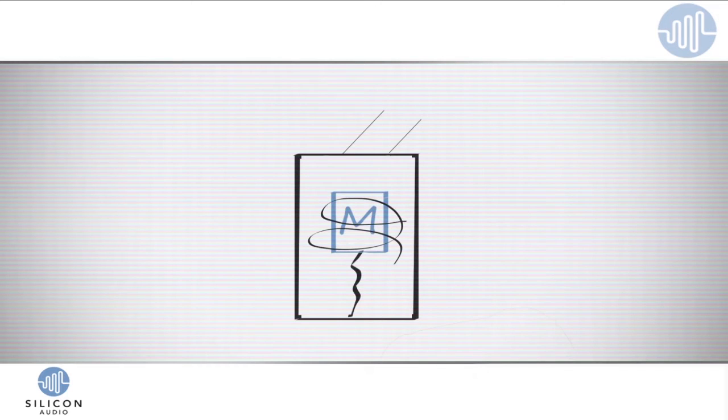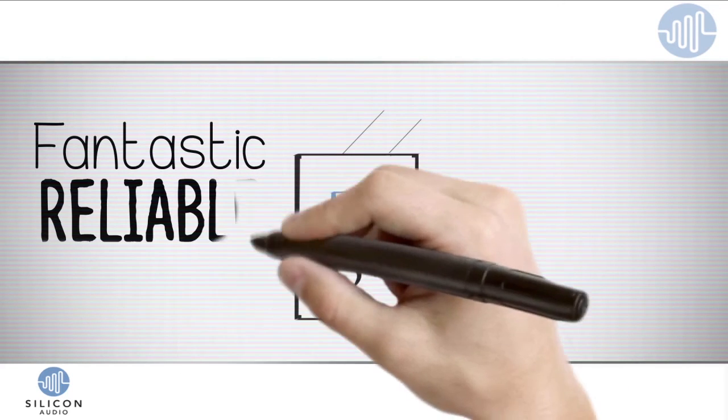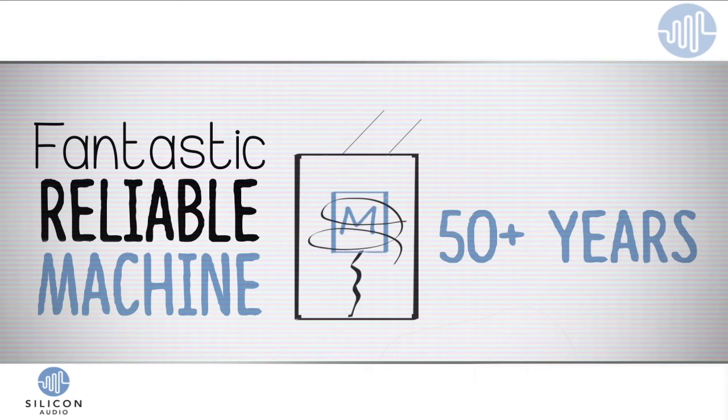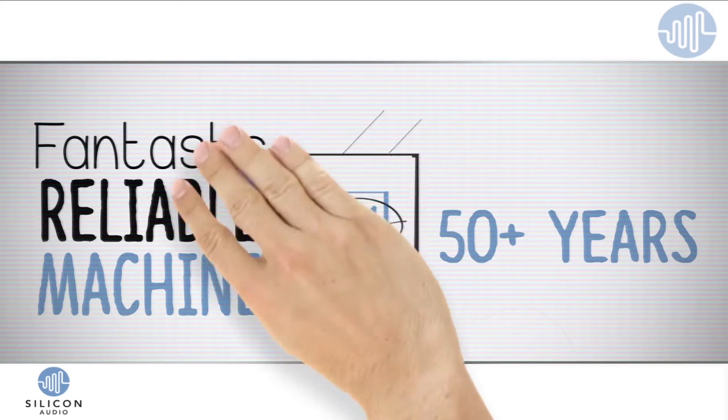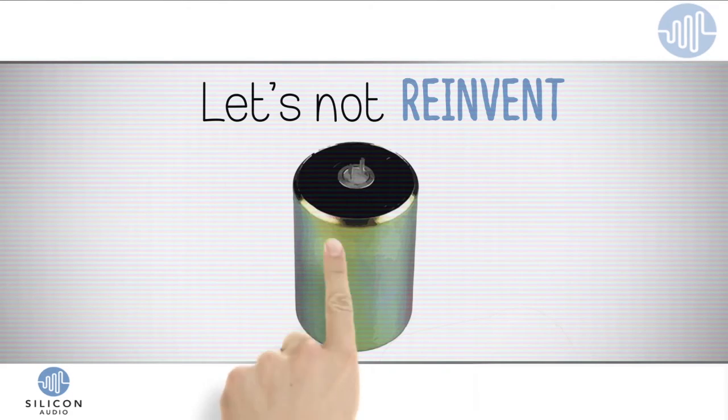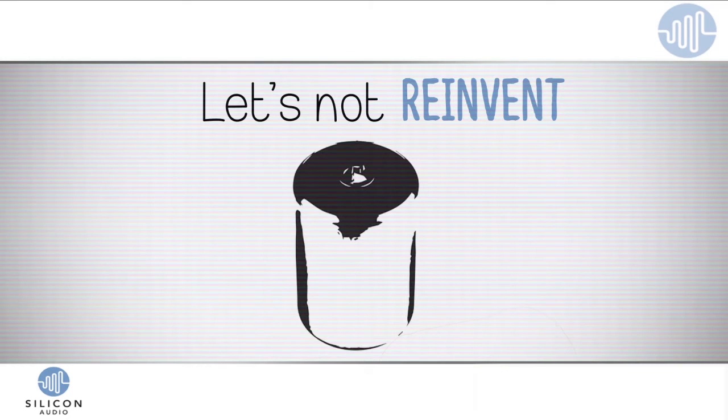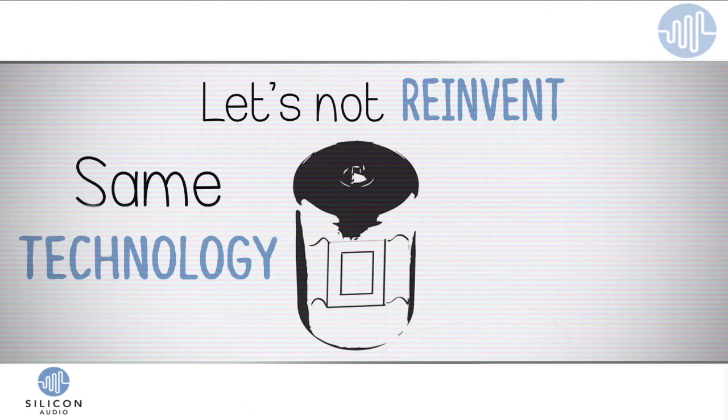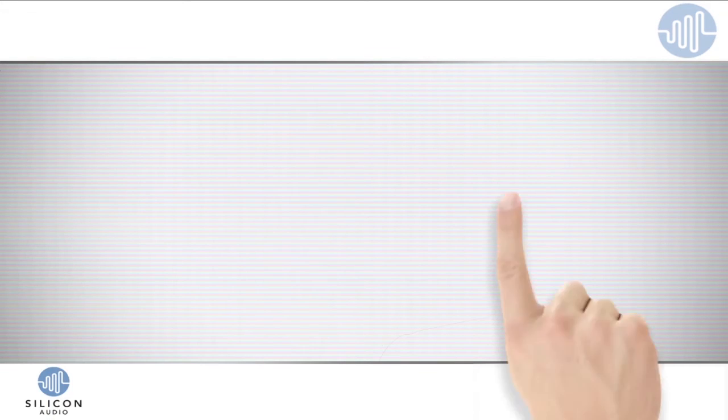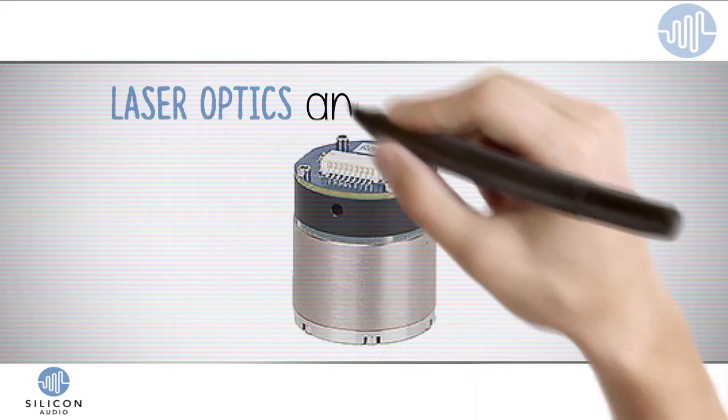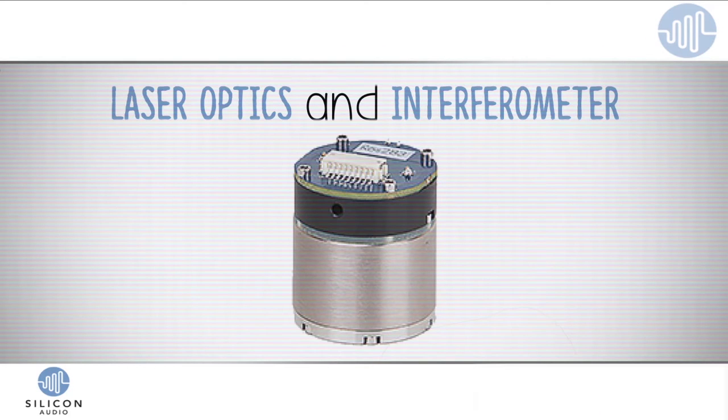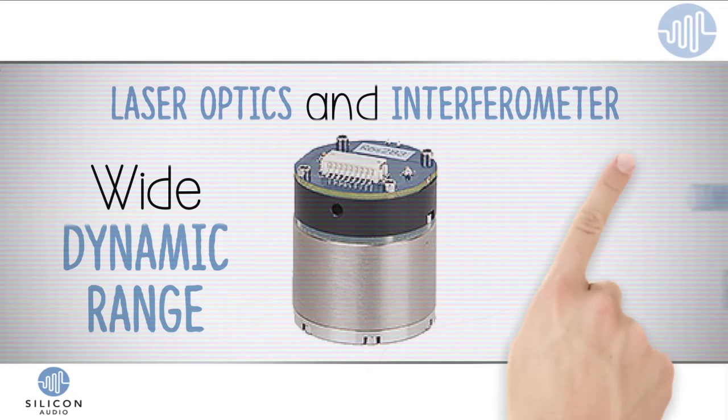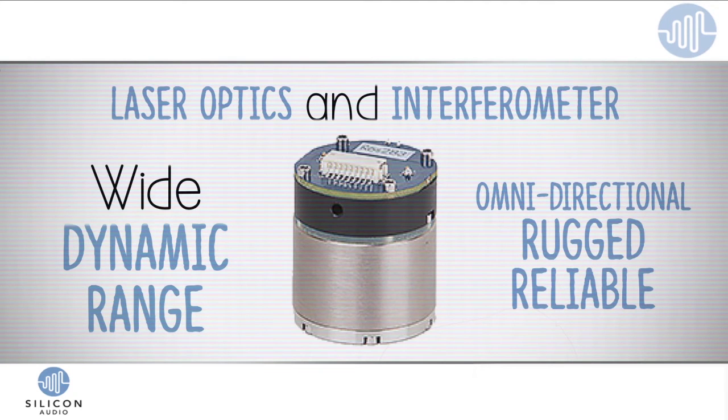So, while the core design of the traditional geophone is a fantastic, reliable machine that's been used for decades, we know that certain elements of its design create less-than-ideal limitations. So what we said is, let's not reinvent the wheel. Let's keep the great parts that are proven to work and only change the factors that are causing these limitations. That's why all the physical moving parts of our sensor use the same technology as the time-tested geophone. But we discovered a different way to look into and communicate our data, through the use of laser optics and an interferometer, allowing us to produce a very wide dynamic range sensor while supporting an omnidirectional, rugged, and reliable form factor.